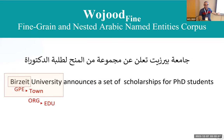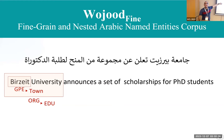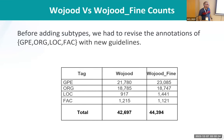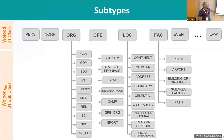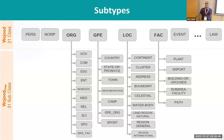Another example: 'Birzeit University announces scholarships for PhD students.' Birzeit, by the name — Birzeit is a town in Palestine. So Birzeit is a GPE, but it's also a town. Birzeit University is an organization that is also an education institution. This is the tree we built — we took only four types of named entities and classified them into more fine-grained subtypes. These entities are based on the ACE corpus developed by LDC, but we enhanced it and made some changes.